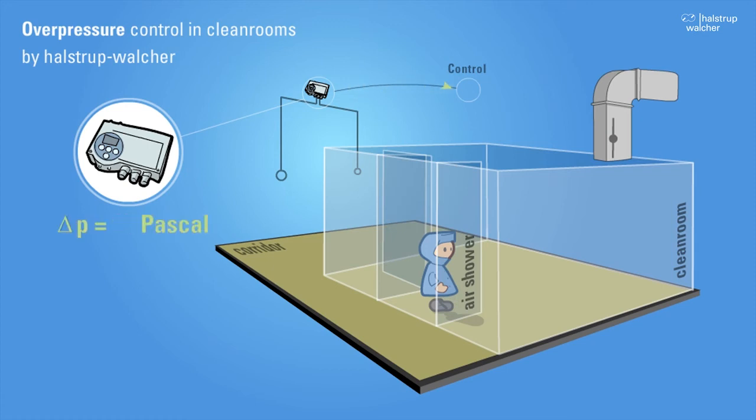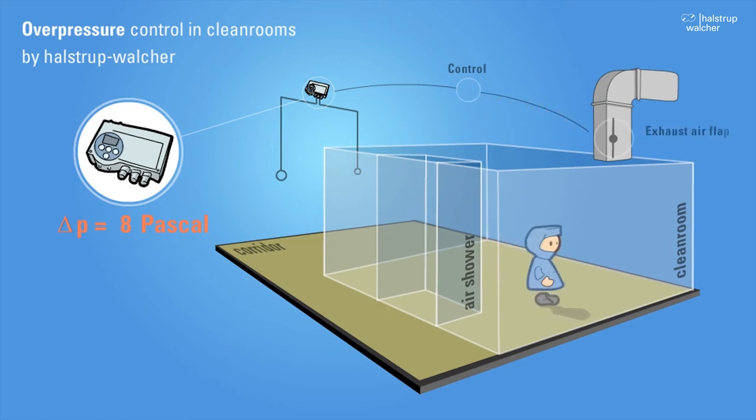If the room pressure falls from its normal level of 15 Pascal to a level below a threshold value, the control system responds by closing the exhaust air flap.